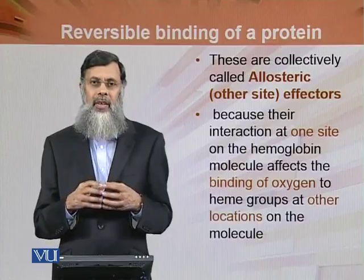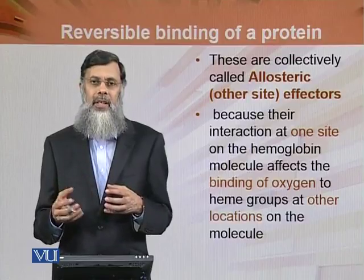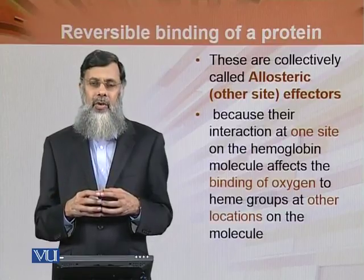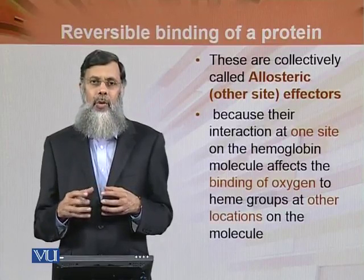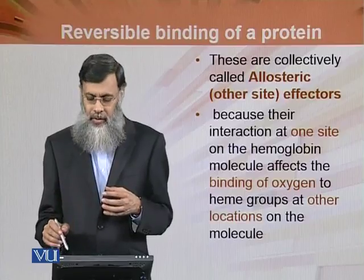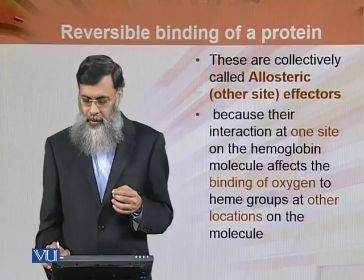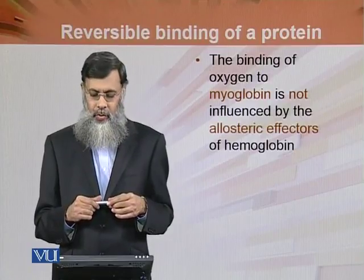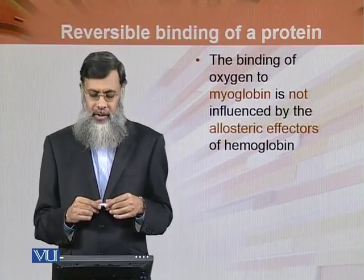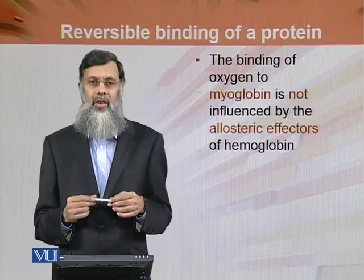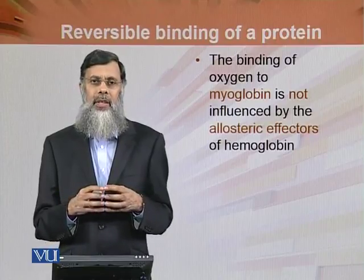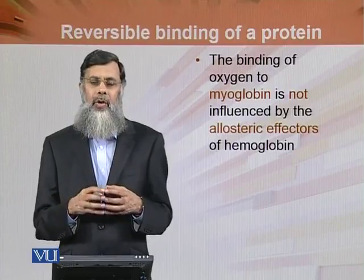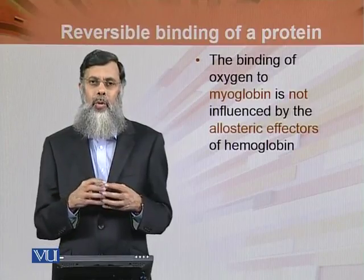یہ allosteric effect oxygen کا ہے، اس کے علاوہ pH، partial pressure of carbon dioxide، اور 2,3-bisphosphoglycerate concentration بھی hemoglobin کی oxygen binding کو effect کرتی ہے۔ The binding of oxygen to myoglobin is not influenced by the allosteric effectors of hemoglobin — یہ تینوں allosteric effectors myoglobin میں نہیں ہوتے، اس لیے کہ myoglobin ایک monomer ہے۔